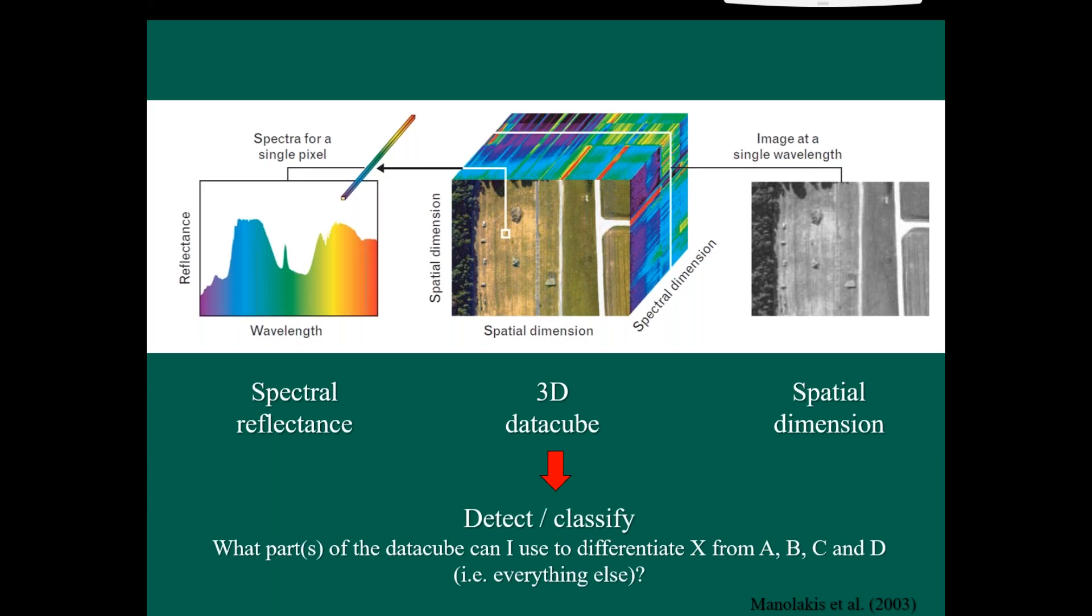But the benefit is you can start asking questions with this data such as out of, in this data cube, what can I use to differentiate X from anything else in this image? Or it might be, how can I differentiate four classes of things, whether that's four levels of crop biomass from everything else in the image?